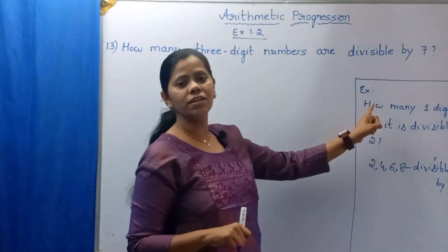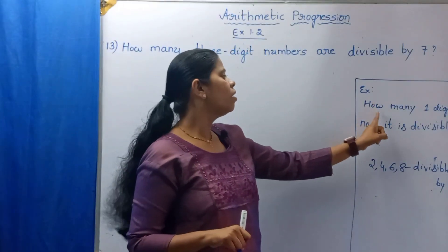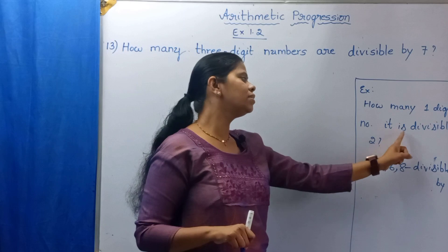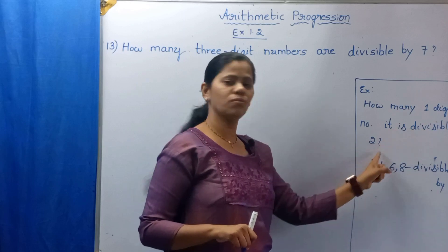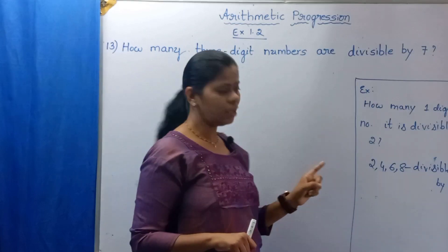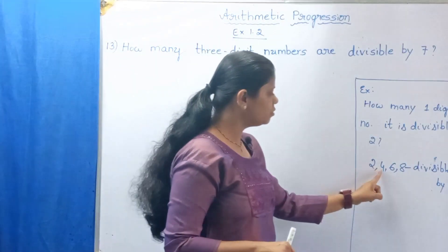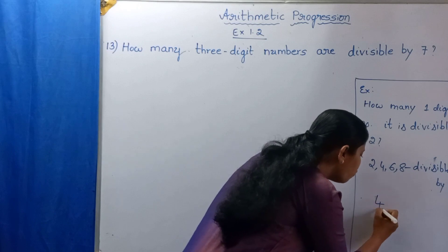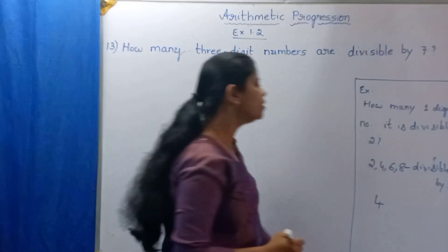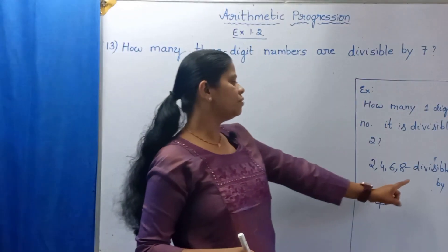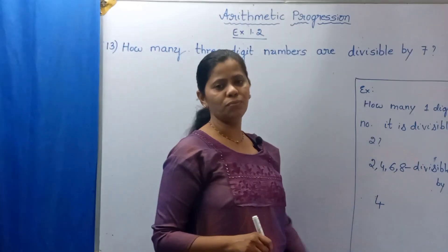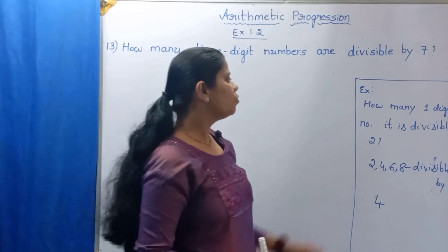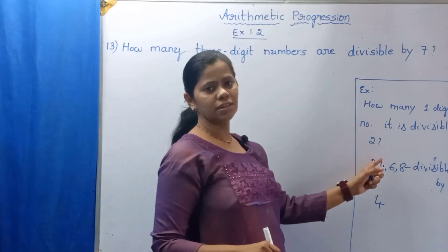So in the question they have asked, how many 1-digit numbers are divisible by 2? How many? 1, 2, 3, 4. Means 4 one-digit numbers are divisible by 2.